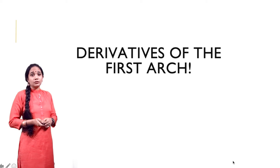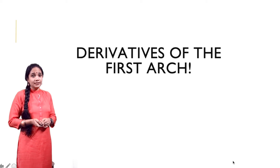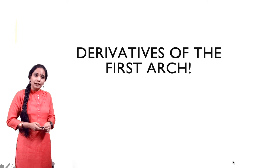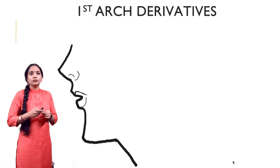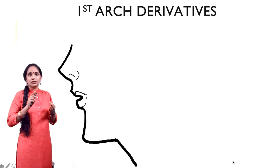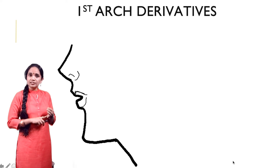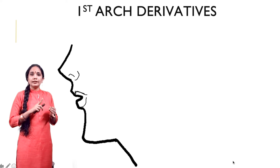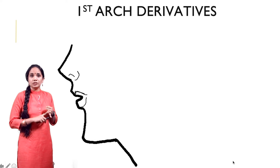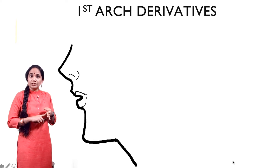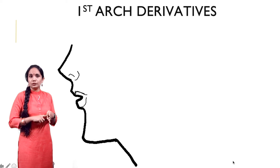Hello everybody. Let us talk about the derivatives of the first pharyngeal arch. The first arch derivatives arise from four main structures: a cartilaginous core which gives rise to skeletal structures, mesodermal structures which give rise to the muscle components, a particular nerve for each arch, and finally the arch arteries.